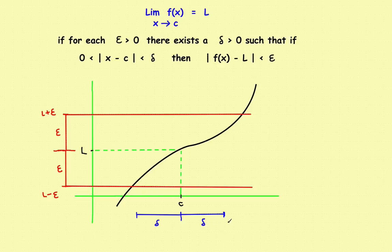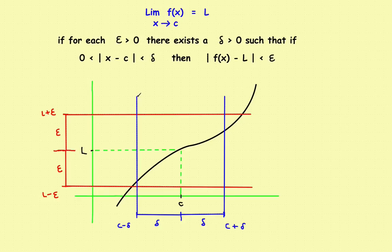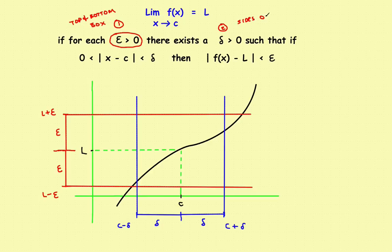If I start at C and go delta to the right, this distance would be C plus delta. If I started at C and went delta to the left, this distance would be C minus delta. Now let's draw the box from here. Starting here and going straight up, there's the right edge of the box. Starting here and going up, there's the left edge of the box. So I've actually defined the box. Step one is to identify the top and the bottom of the box. Step two is to identify the two sides of the box — delta gives you the sides of your box.